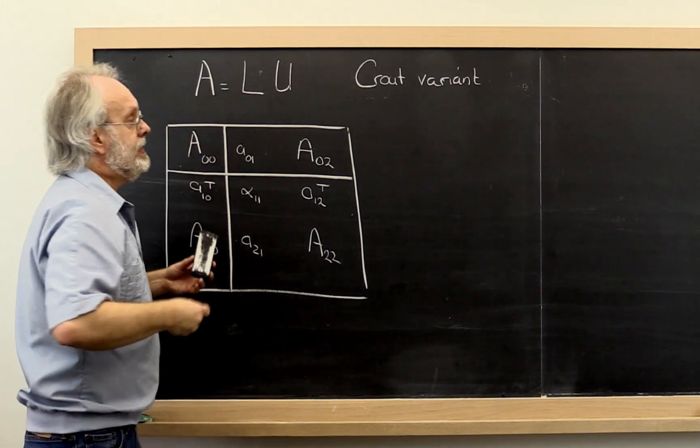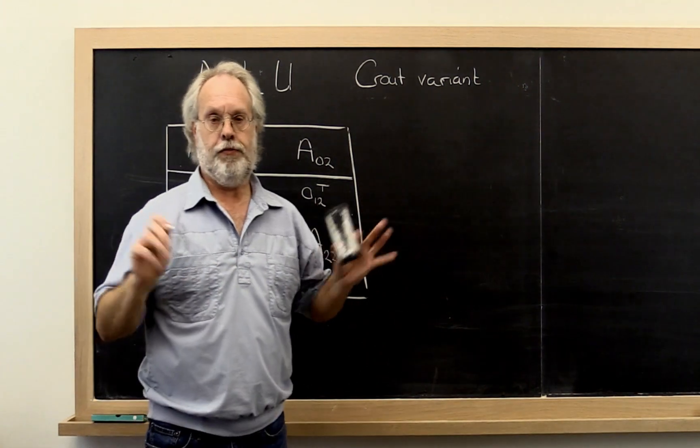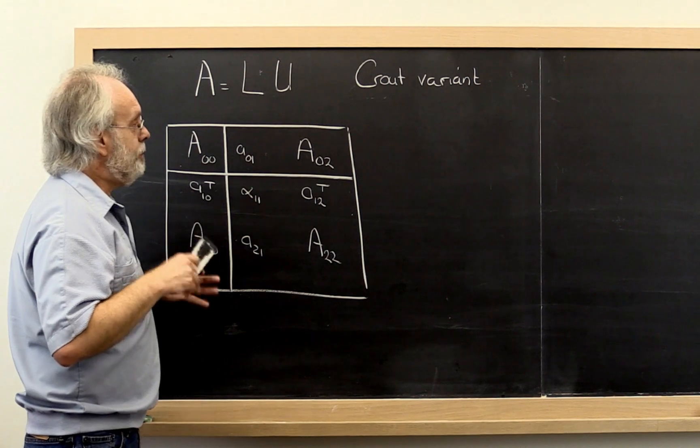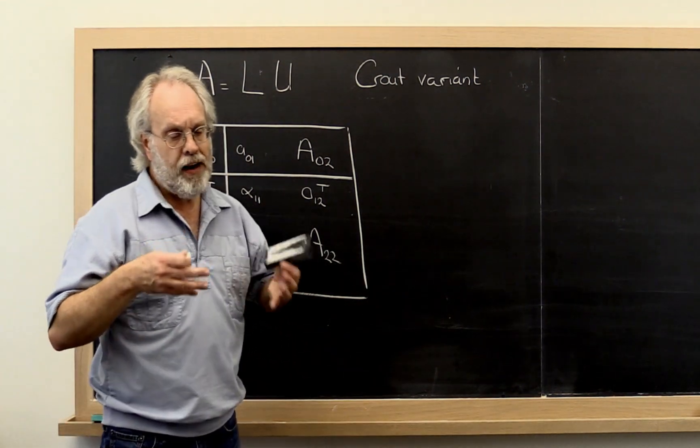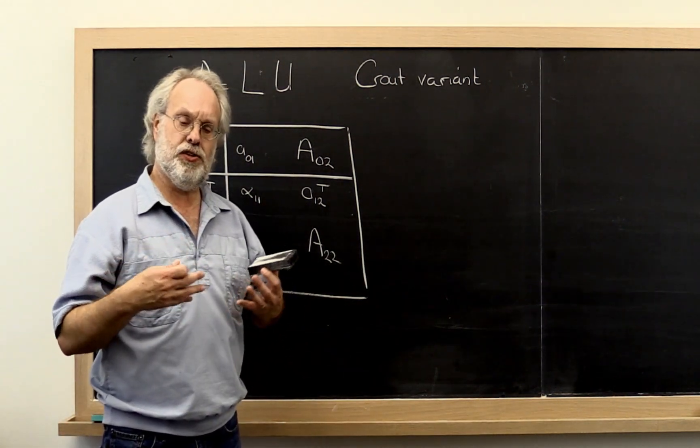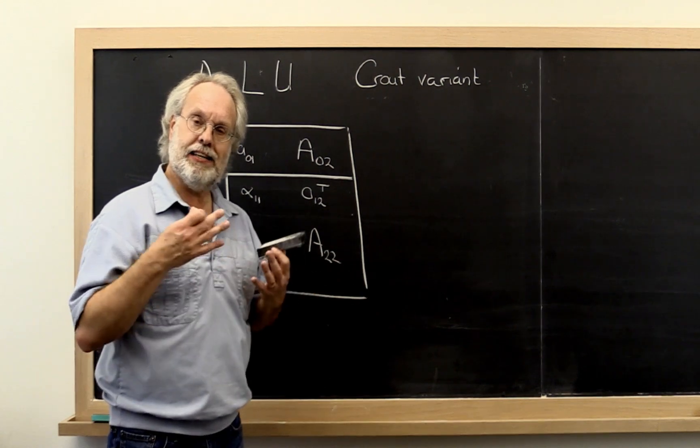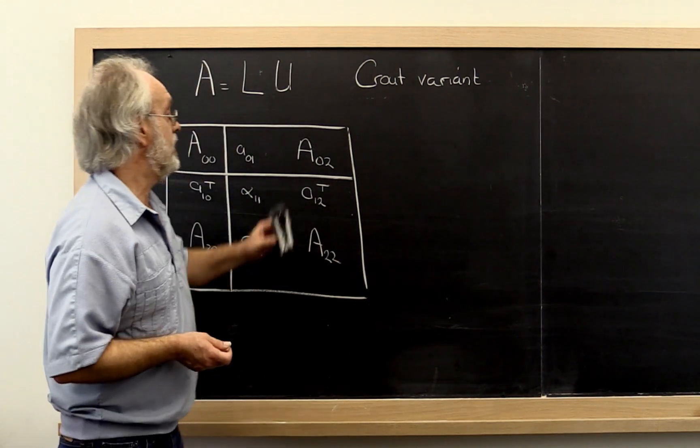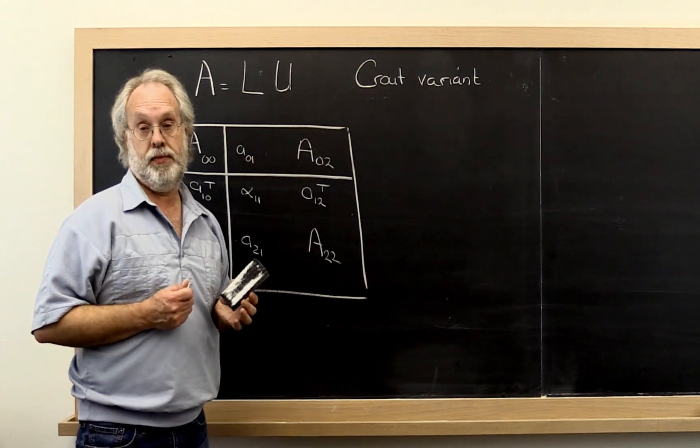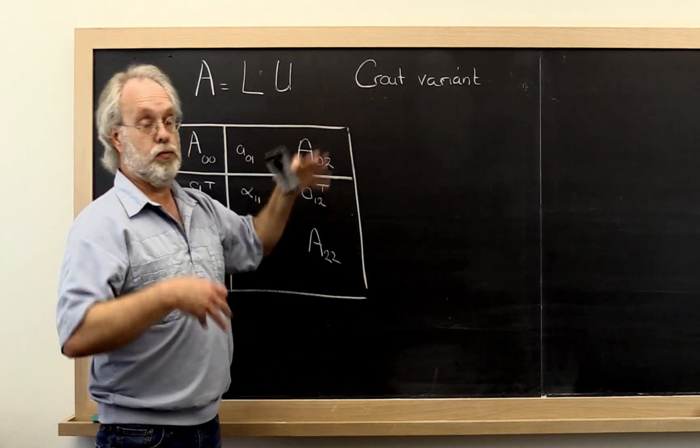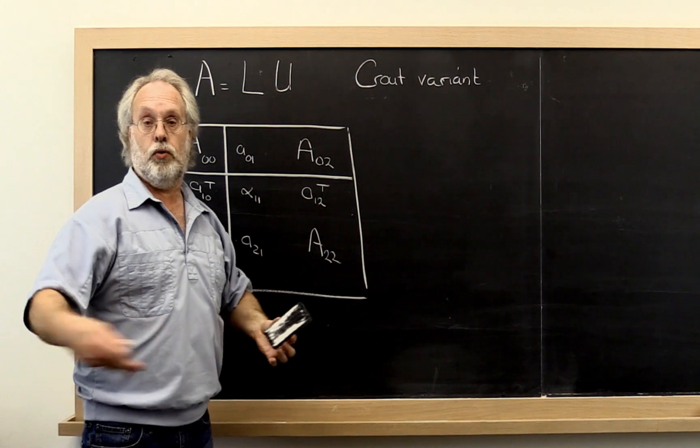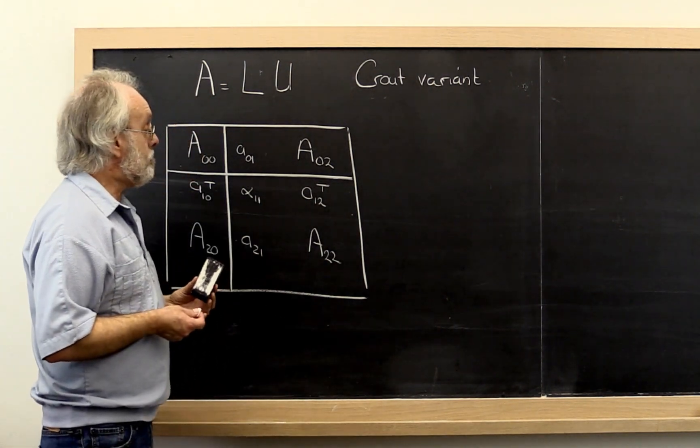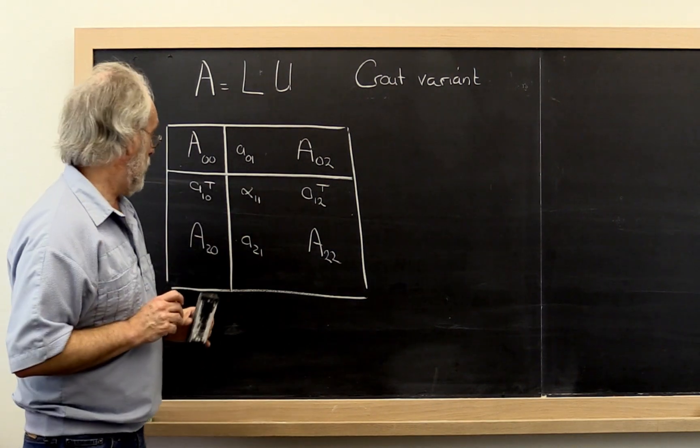Now it turns out there are actually five different variants. The variant that we found is easiest to analyze given the pieces we've put together so far is known as the Crout variant. Crout was some mathematician. You can go look up about who this person was. And this is how the algorithm goes.